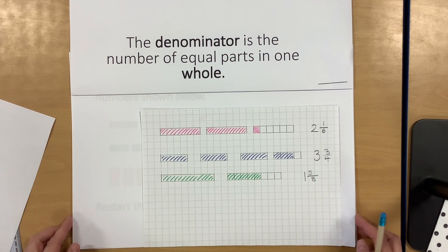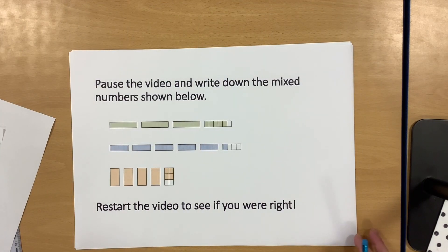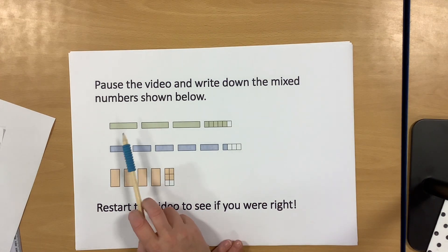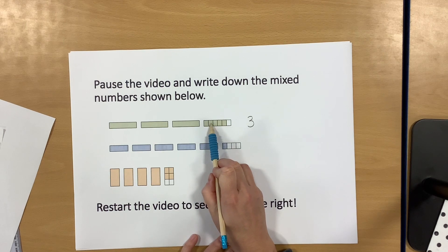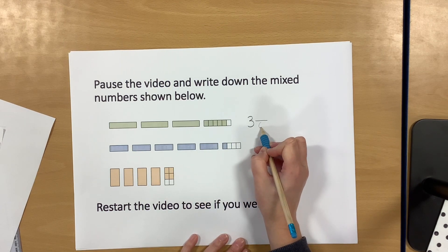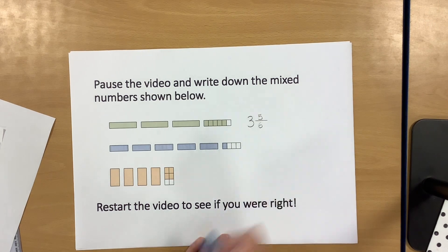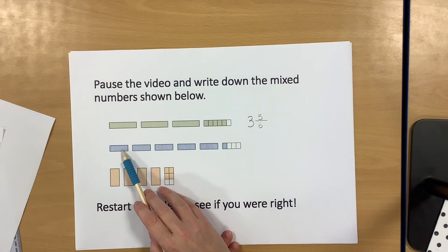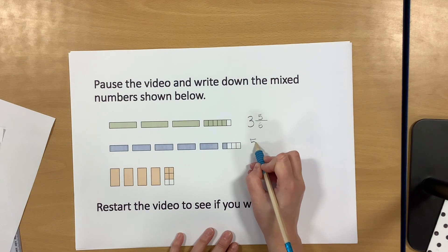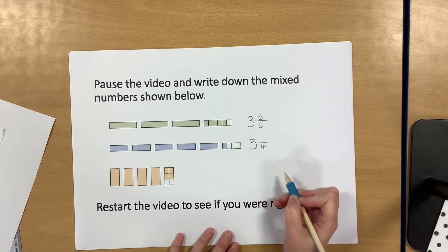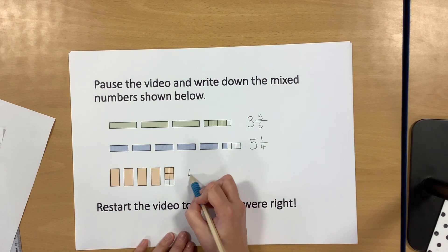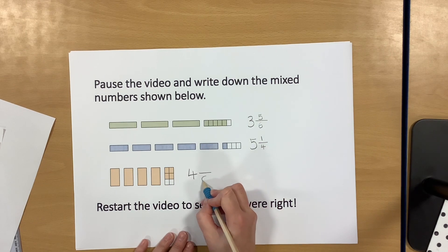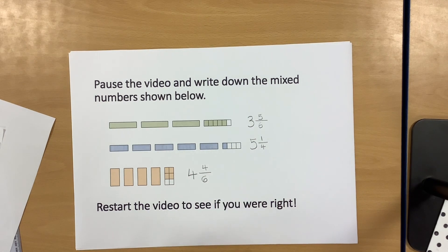I'm going to now show you some — pause the video, write down which mixed numbers you think are being shown, and then restart the video to see if you were right. This picture shows three wholes, and this one is split into six equal parts with five of them shaded in, so that shows three and five sixths. This one shows five wholes, and this part is split into four equal parts with one shaded — so it's five and a quarter. This one has four shapes shaded in completely, and this last shape is split into six equal parts with four of those shaded in, so this picture represents four and four sixths.